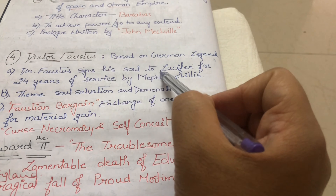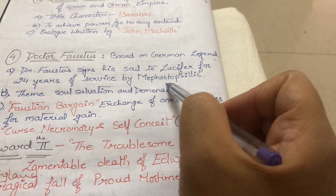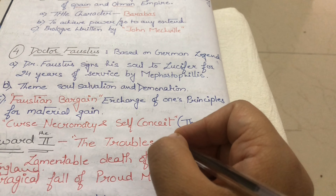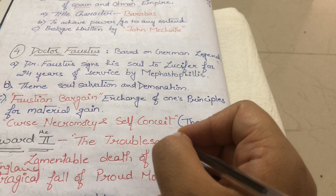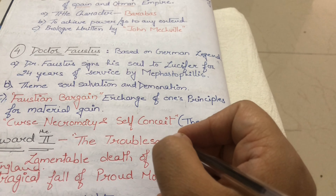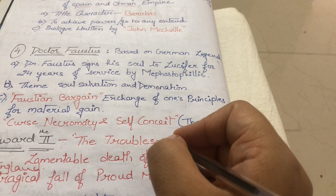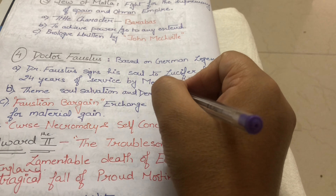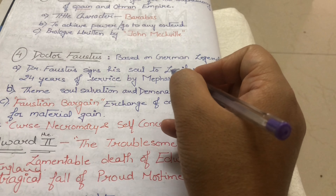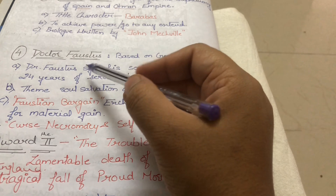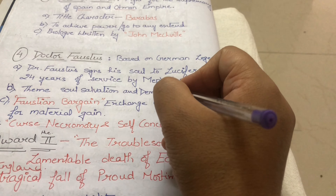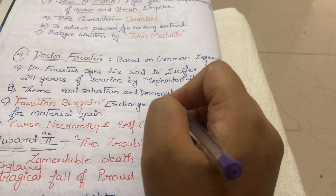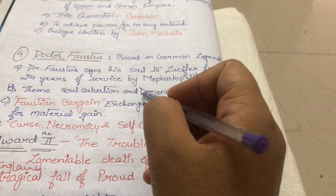The next work is Doctor Faustus. Doctor Faustus is a doctor who has mastered all fields of knowledge and now seeks something beyond. He signs his soul to Lucifer for 24 years of service provided by Mephistopheles. Lucifer is a demon — the devil — and Mephistopheles is his servant. The theme is soul, salvation, and damnation.